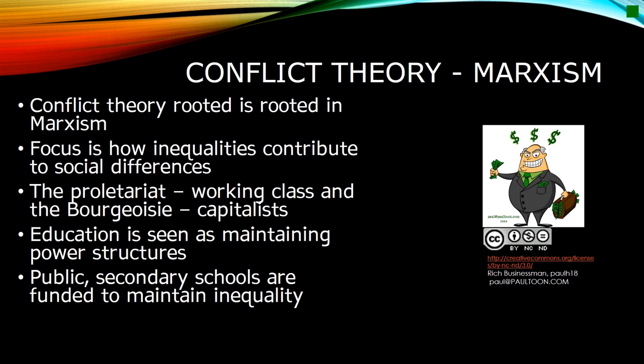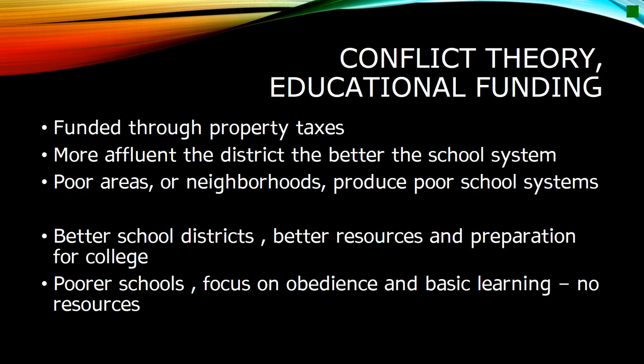Conflict theorists do not see education as a social benefit or opportunity, but rather as a powerful means of maintaining power structures and creating a docile workforce for capitalism. Schools differ widely in their funding and learning conditions, and this type of inequality leads to learning disparities that reinforce social inequality. This misalignment of funding for schools begins with how revenue is collected for school systems. The primary funding source for secondary education is property tax. The value of homes in upper middle class and affluent neighborhoods is much greater than those in low income or poverty-ridden areas, and therefore school districts in wealthy or affluent districts have more money to invest in their school system.